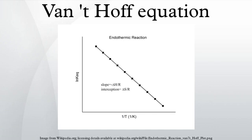The Van't Hoff equation has been widely utilized to explore the changes in state functions in a thermodynamic system. The Van't Hoff plot, which is derived from this equation, is especially effective in estimating the change in enthalpy, or total energy, and entropy, or amount of disorder, of a chemical reaction.